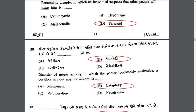A disorder of motor activity in which the person constantly maintains a position without any movement is called catalepsy. In catalepsy, the patient remains in the same position for a longer time, which can lead to contracture.